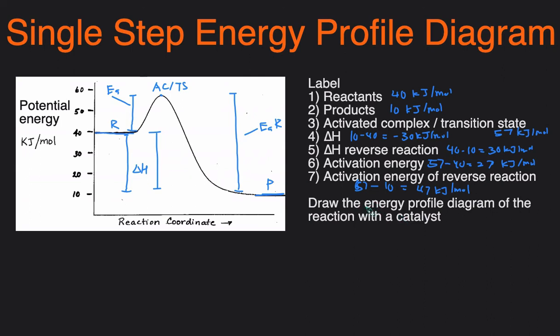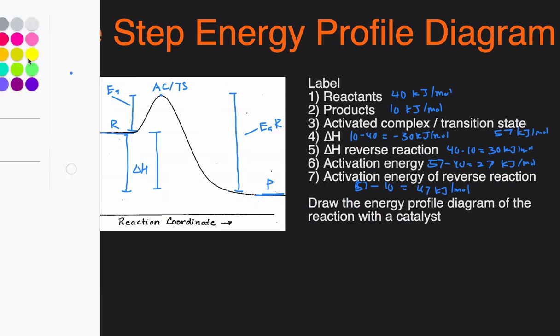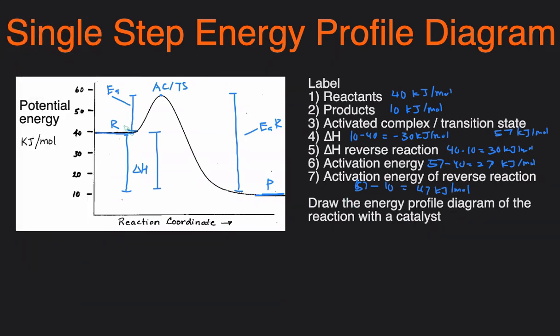And next we have to draw how the energy profile diagram would look like if a catalyst was used. So a catalyst just speeds up the reaction by lowering the activation energy, but it doesn't change the energy of the products or reactants. So the beginning line and the ending line will stay the same, and the only difference is that we're going to make the hump smaller.